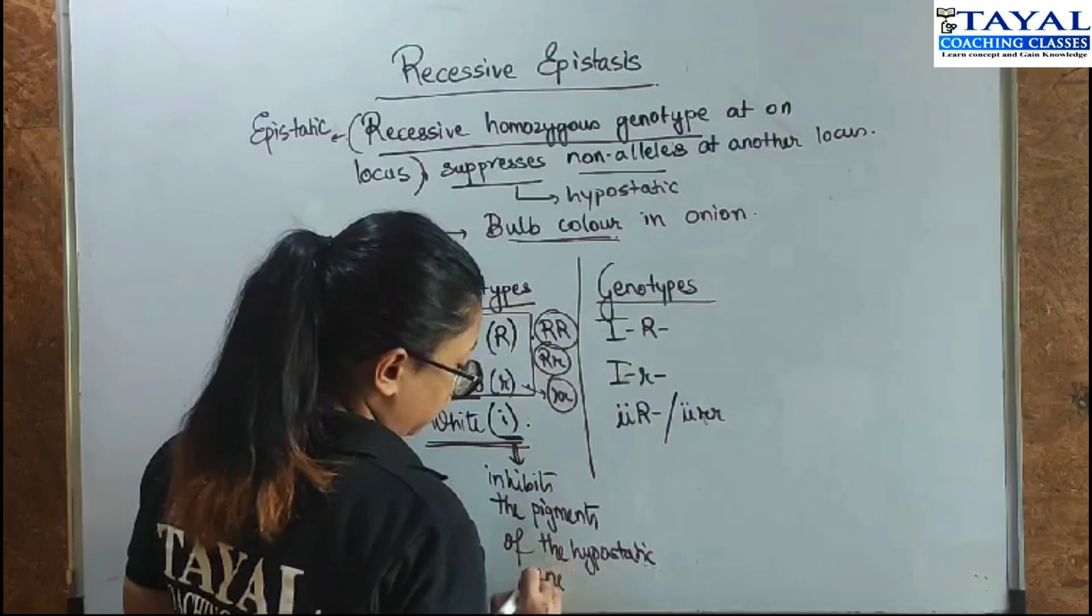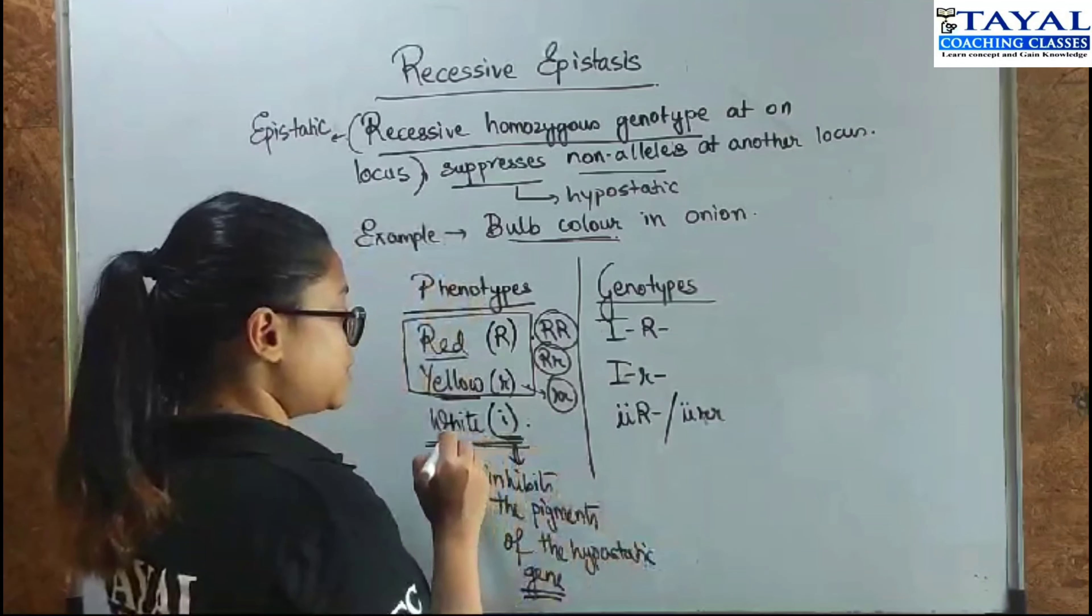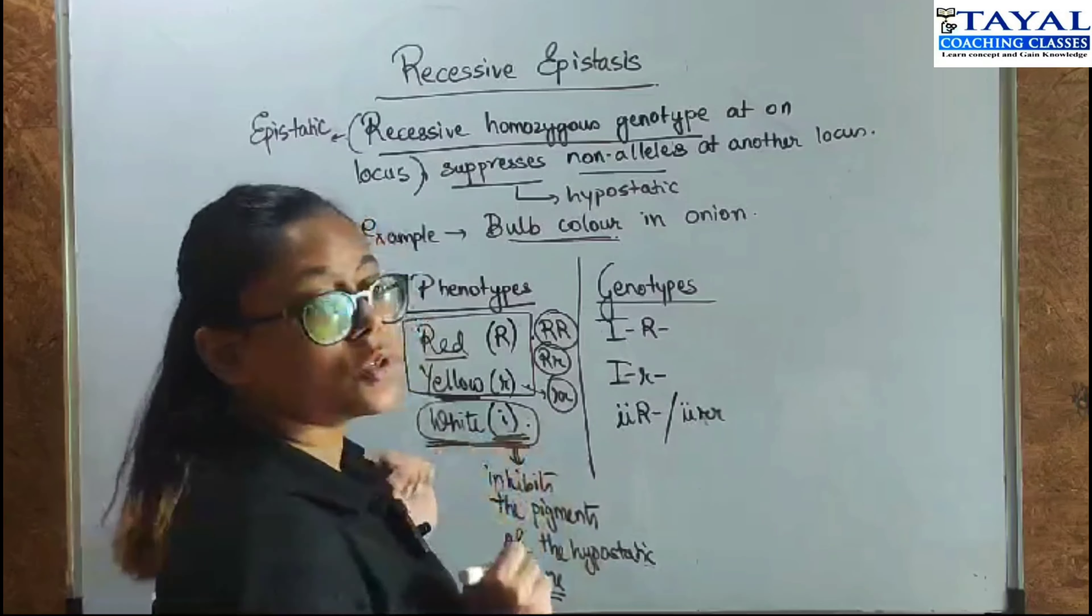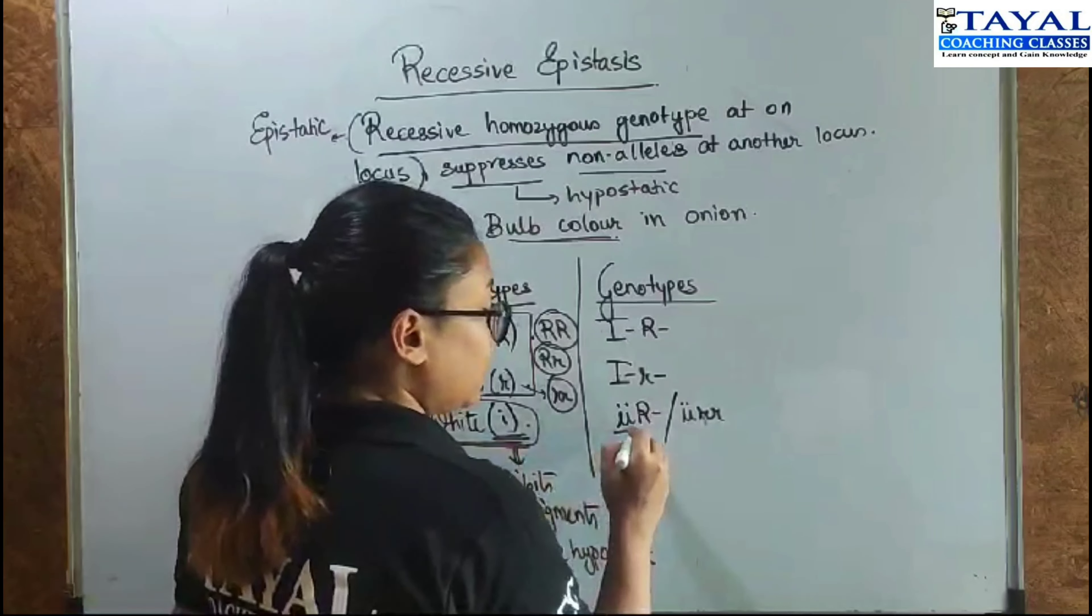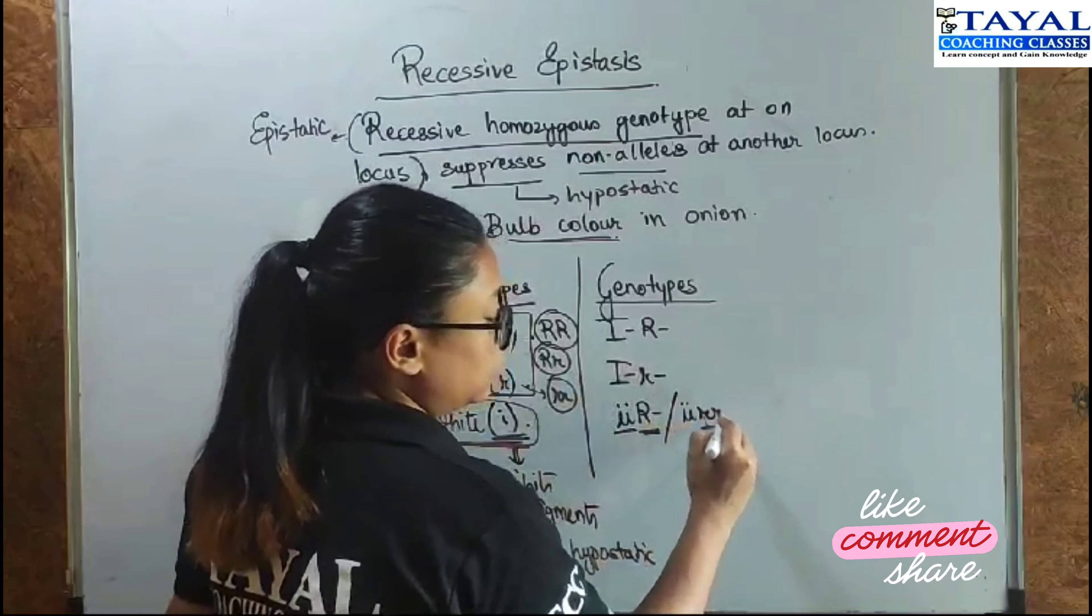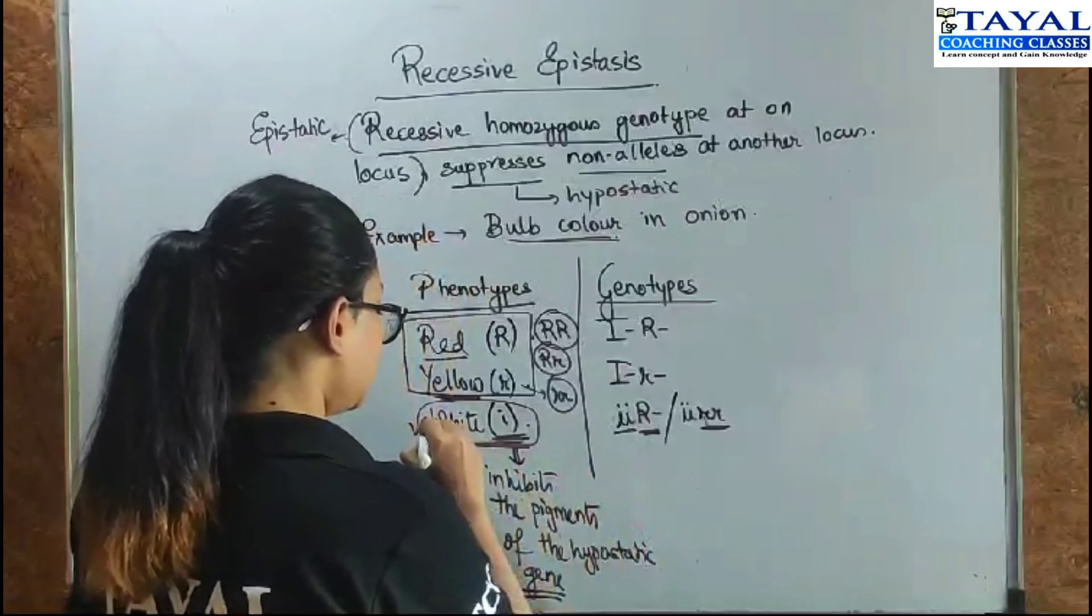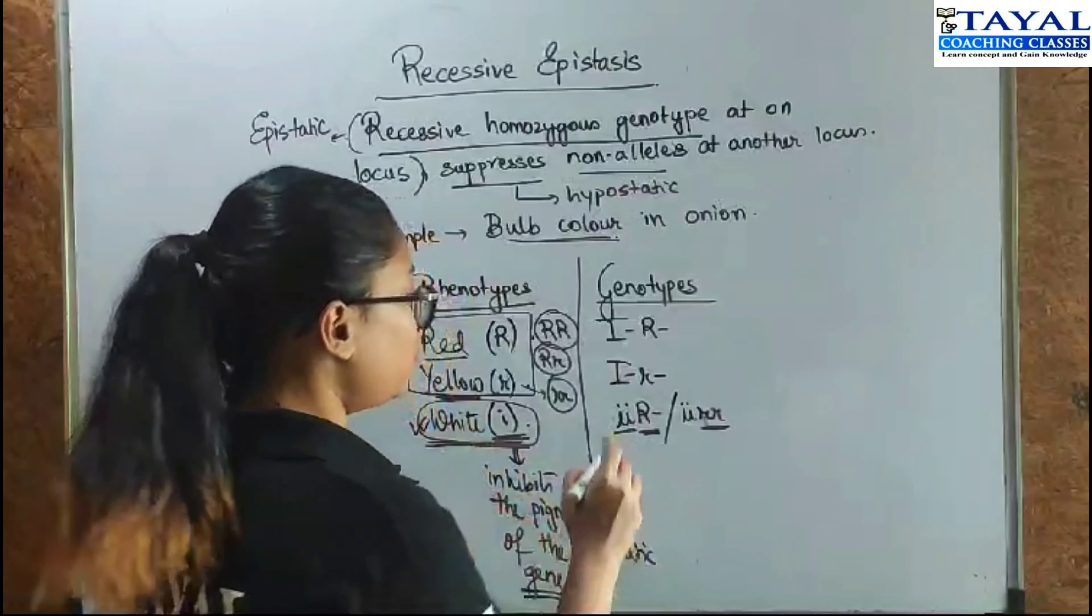Therefore, if this particular gene is present in its recessive homozygous condition, then no matter what the configuration of the R gene is, you will always get a white bulb.